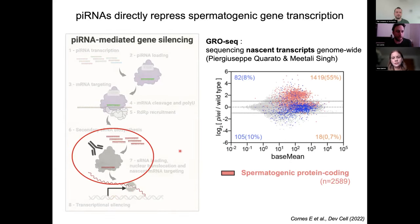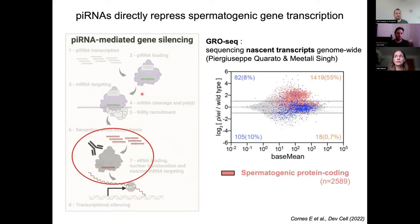Immunoprecipitation experiments combined with small RNA sequencing confirmed that the nuclear Argonaute loads secondary small RNAs that are antisense to spermatogenic transcripts, and this loading was dependent on piRNA targeting — overall confirming a direct repression of spermatogenic genes by the piRNA pathway.